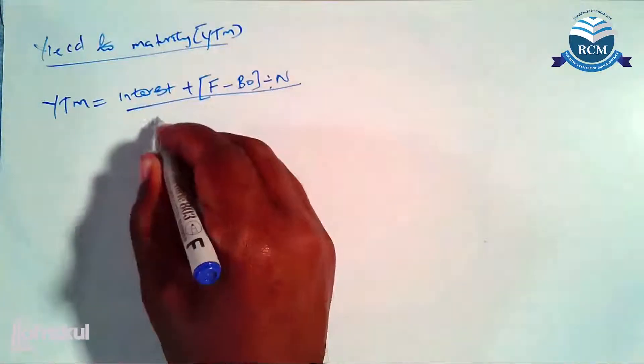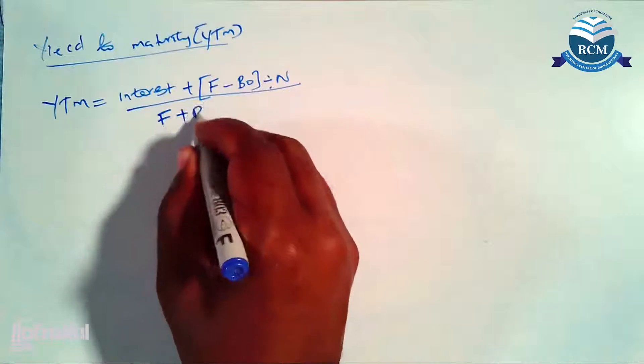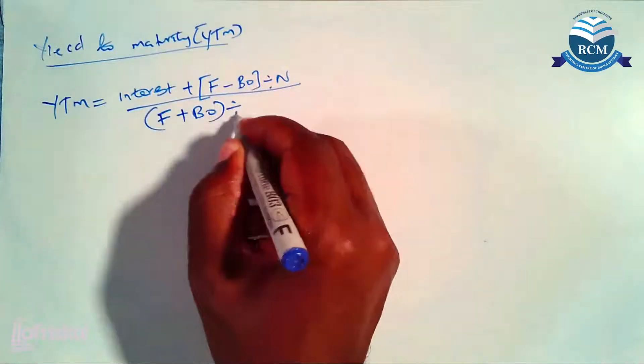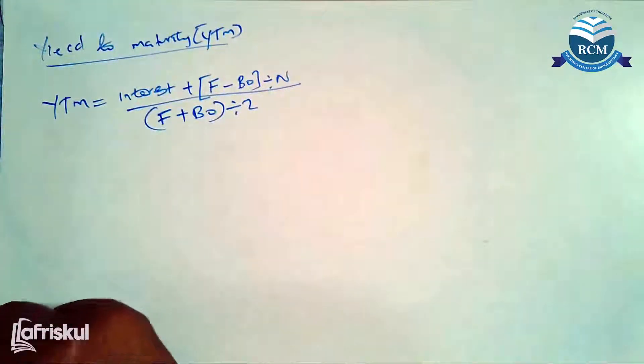How do we get average investment? It is F plus BO divided by two. F plus BO divided by two. So please, I want us to calculate the yield to maturity for this particular bond.